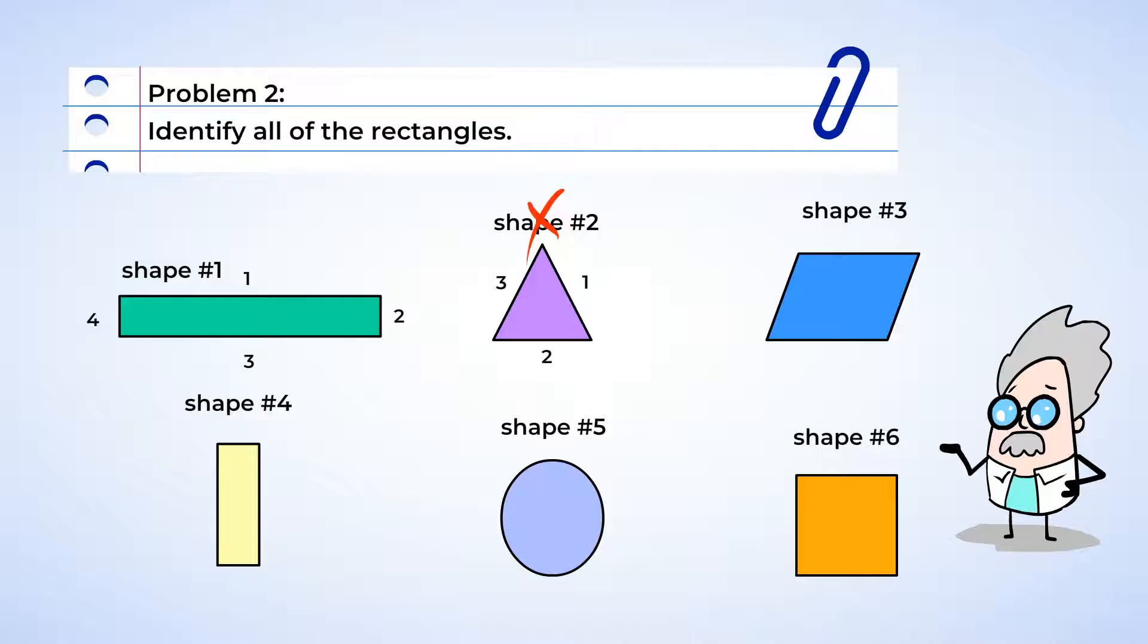Shapes 3 and 4 have four sides. And shape 5 is round. I'm gonna cross that one off. And shape 6 has four sides.